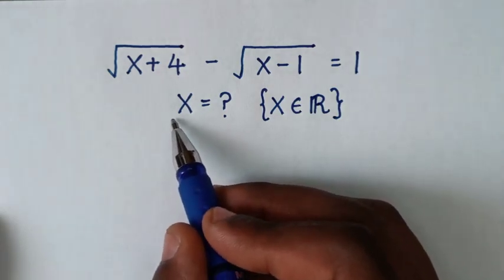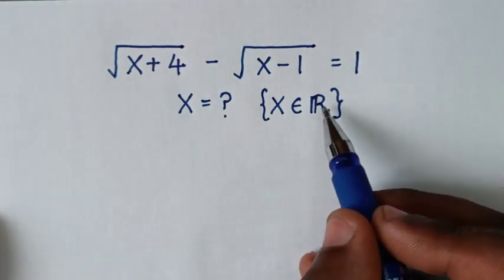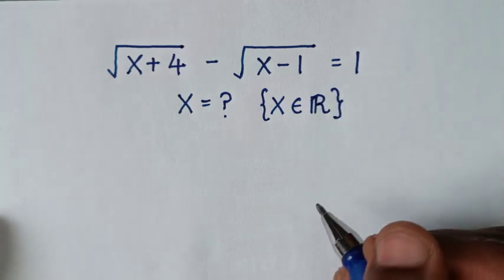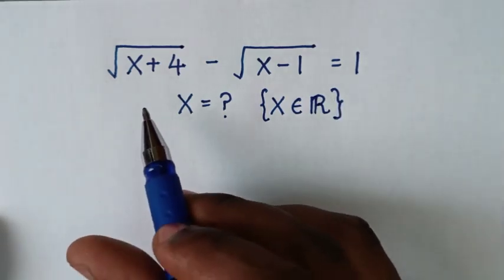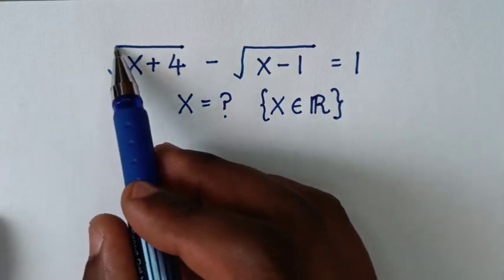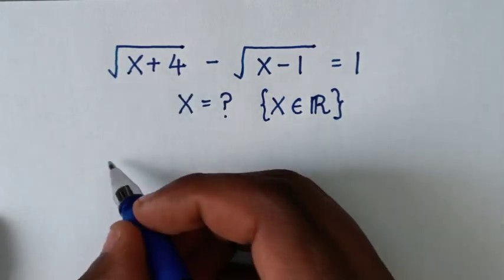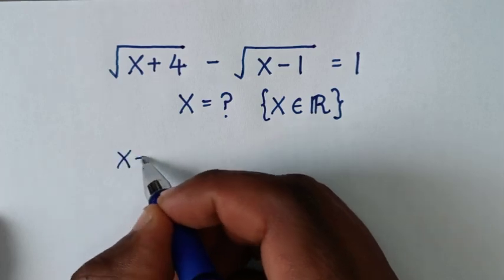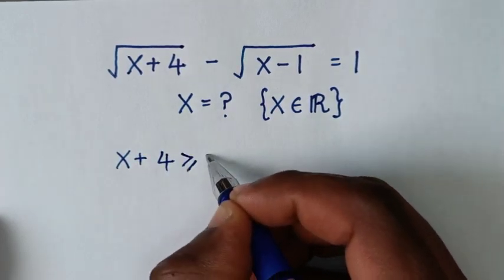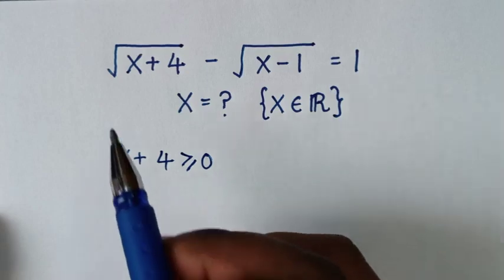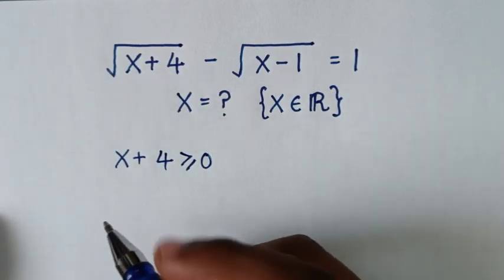To find the value of x from this equation, set that x is an element of the real numbers. In the first step, let's find the conditions for the value of x. Because here we have square root of (x plus 4), so x plus 4 should be greater than or equal to 0, so that the value of x should be a real number and not a complex number.